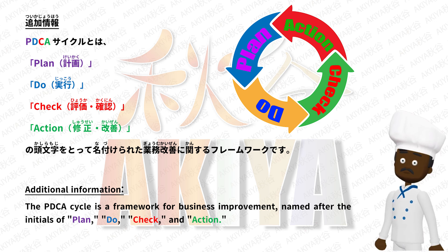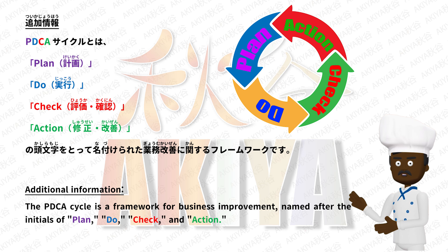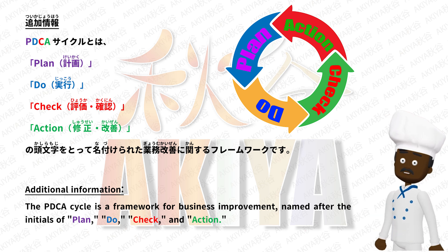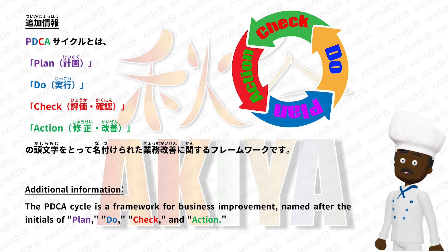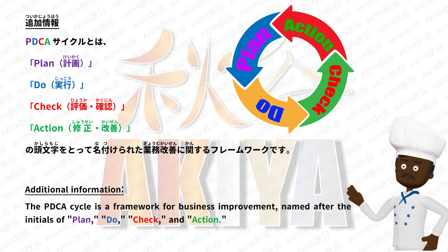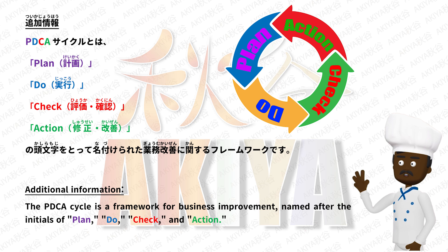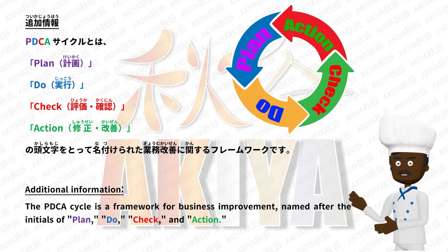Additional information: the PDCA cycle is a framework for business improvement named after the initials of Plan, Do, Check, and Action. The PDCA cycle is a four-step model for carrying out change — like a continuous loop, it should be repeated again and again for continuous improvement in business processes. It is also integrated into various management systems, which we will discuss later.